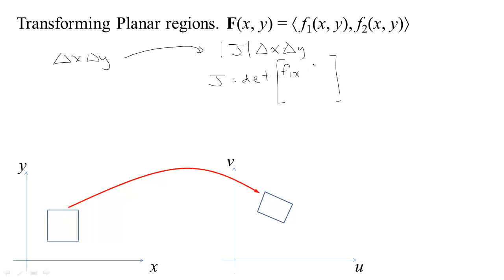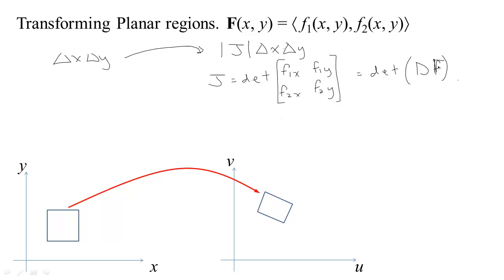That would be f sub 1 sub x, and f sub 1 sub y, f sub 2 sub x, f sub 2 sub y. So this is really just the determinant of the first derivative matrix of our vector-valued function f of the transformation.